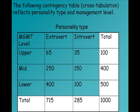65 managers who are upper managers who are extroverts, 35 upper managers who are introverts, and so on. You can see along the outside, highlighted in white, I've just calculated the number of values in each column and row.